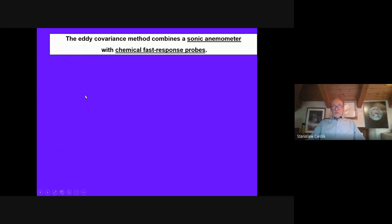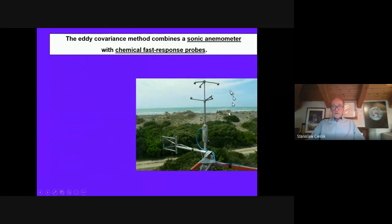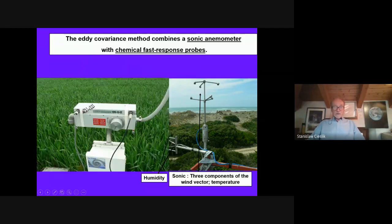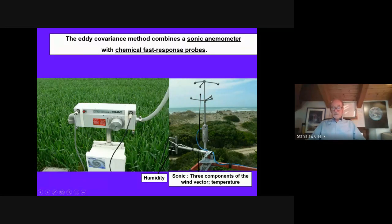Using this method, we combine the sonic anemometer with a chemical fast-response probe. This is an ozone chemiluminescent measuring device, which is also fast response. And there is the KH20 — an open-path spectroscopic measurement of water vapor, also fast response. So you have all this data ready for eddy covariance calculations.